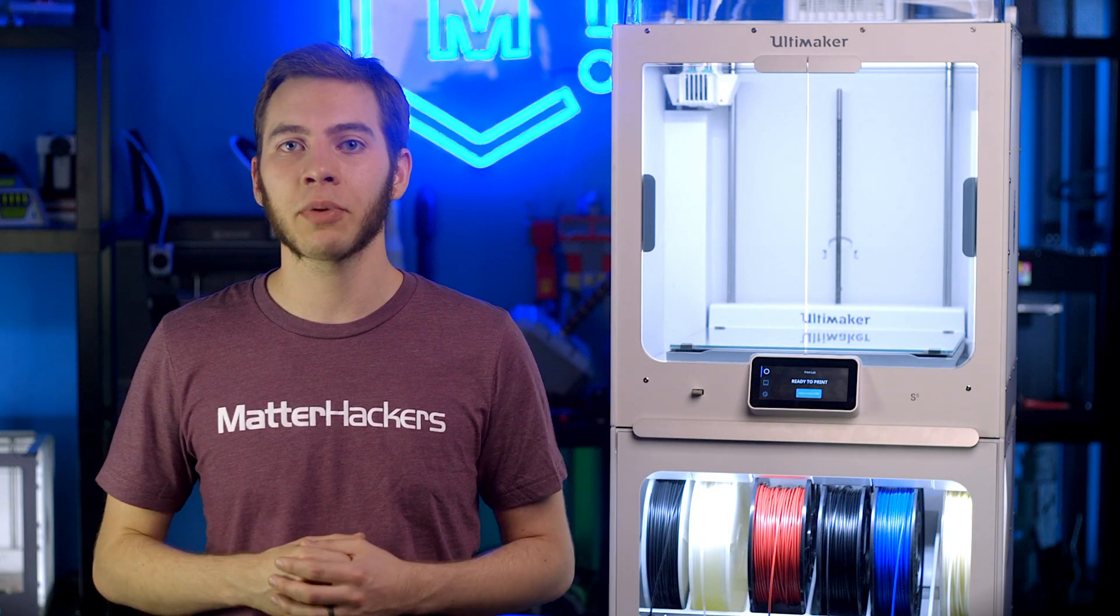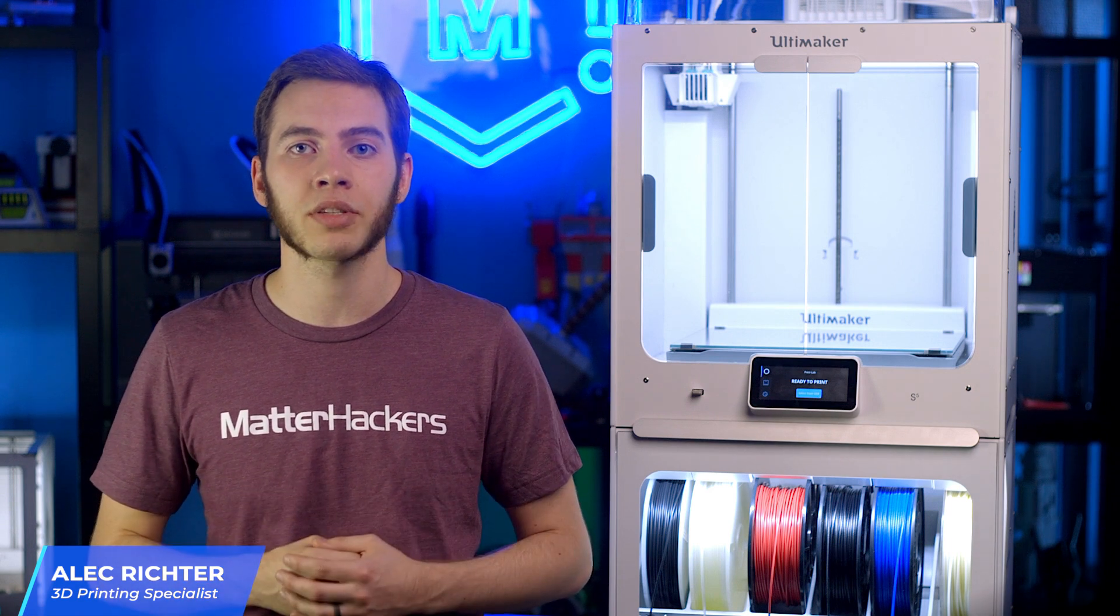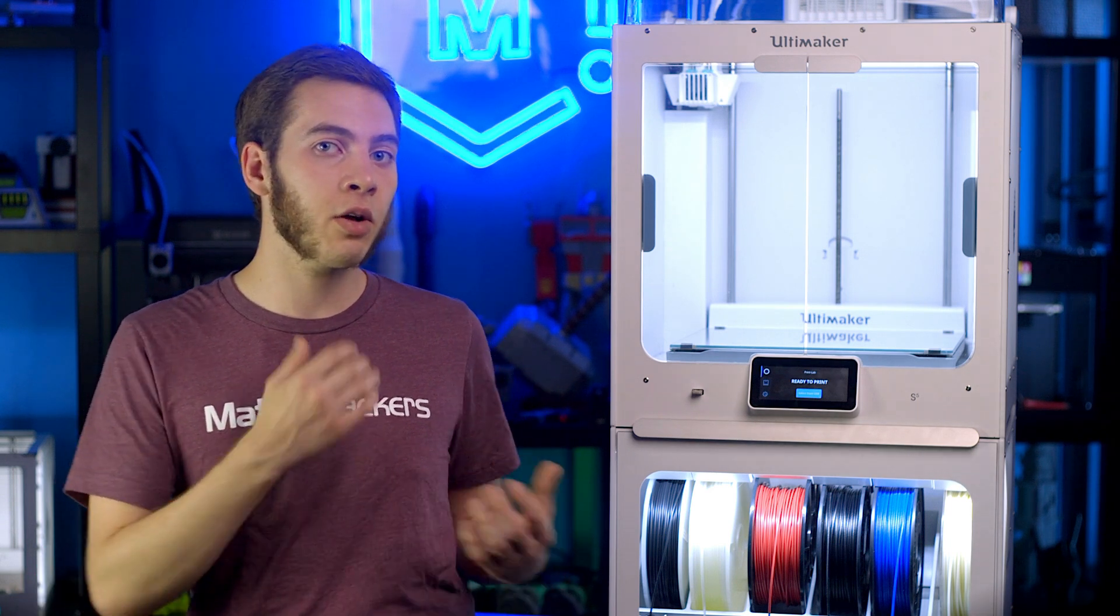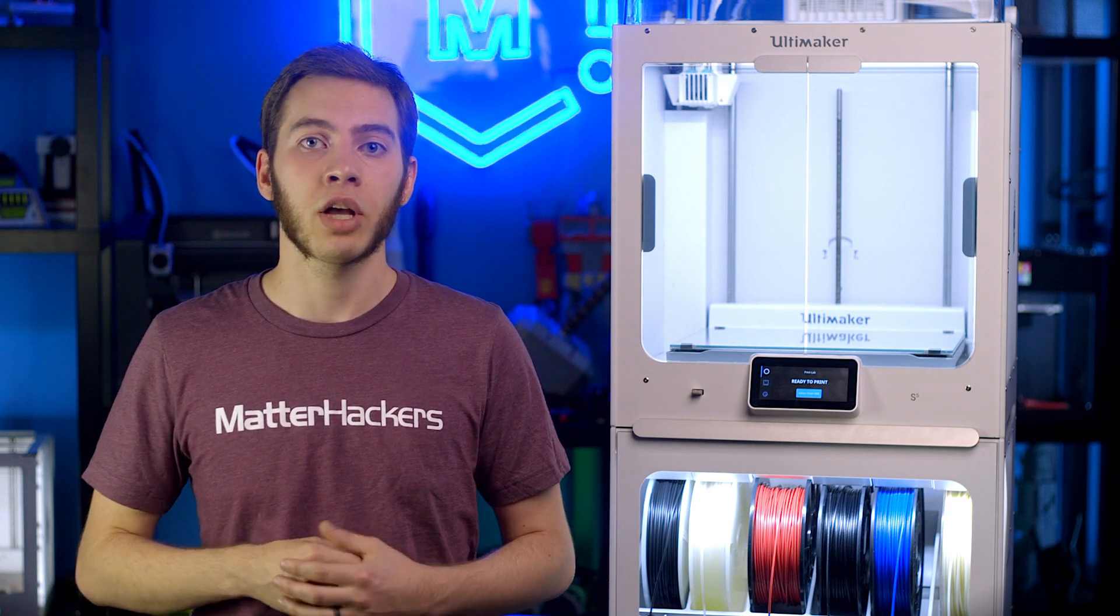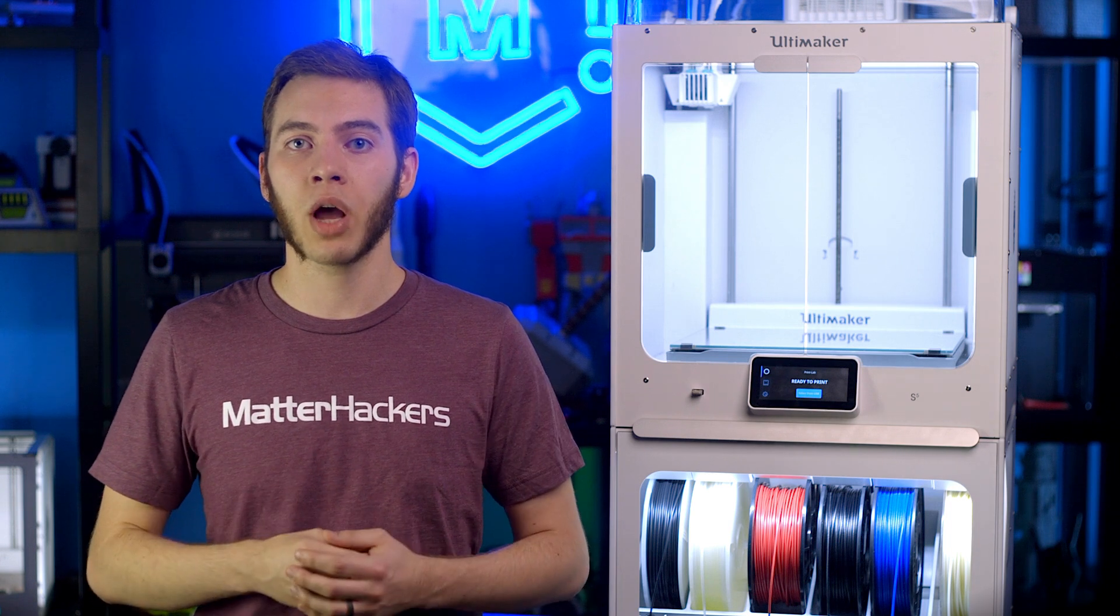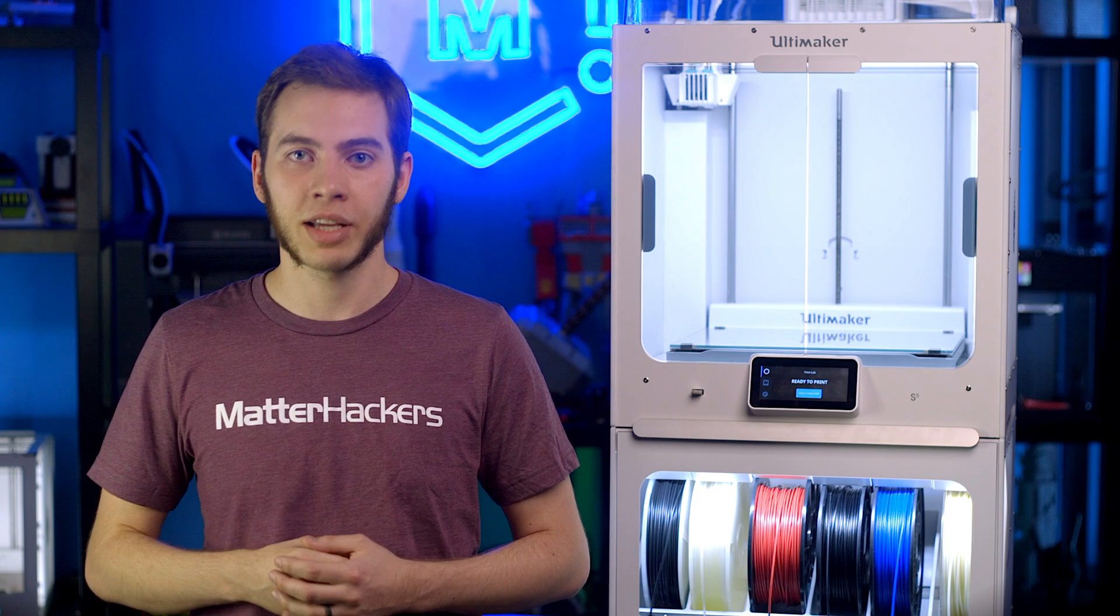The Ultimaker S5 has been a champion for industrial 3D printing with its easy-to-use interface and consistent performance. Building on that success, the Ultimaker S5 Pro Bundle hits the mark. This printer setup intelligently filters the air, swaps materials as needed throughout print jobs, and has the software ecosystem with the breadth and depth to support it. Let's break it down.